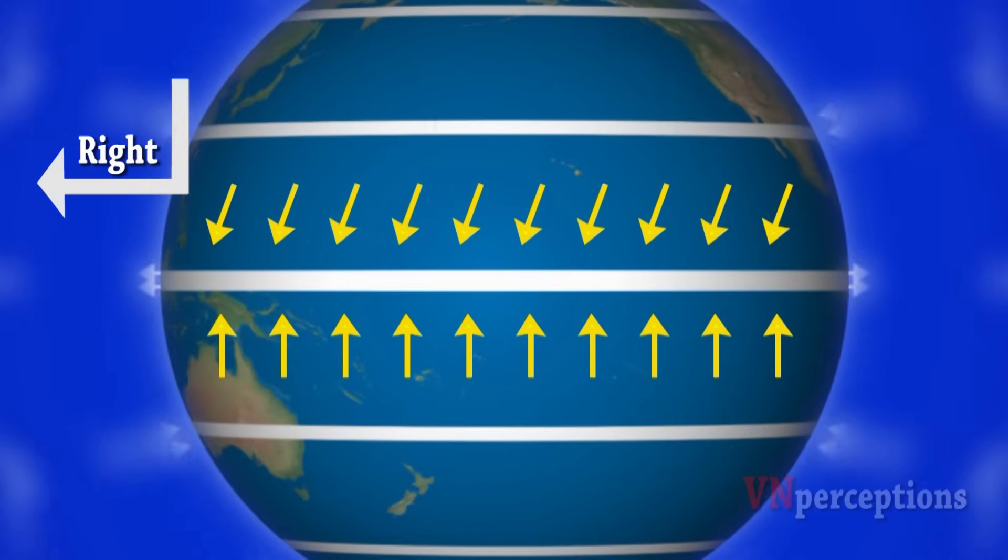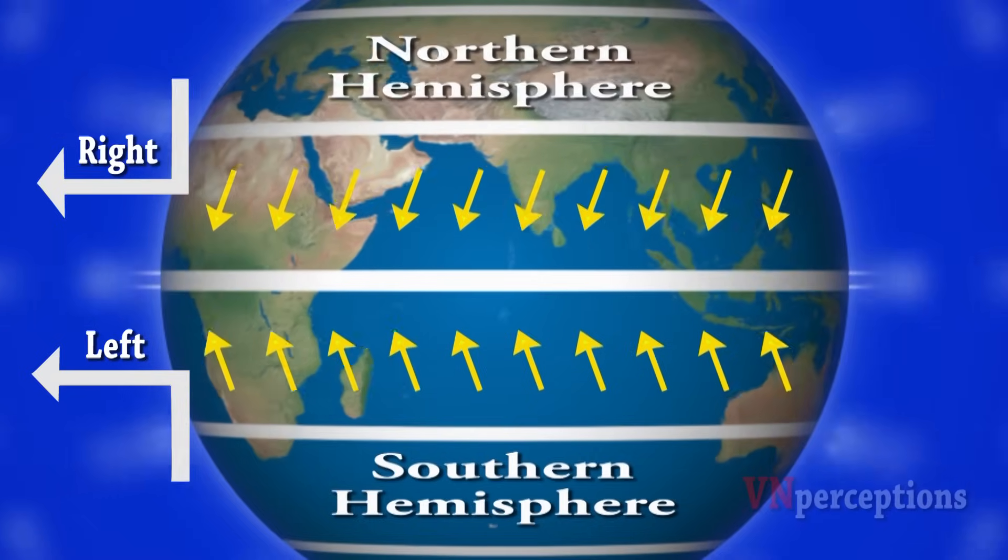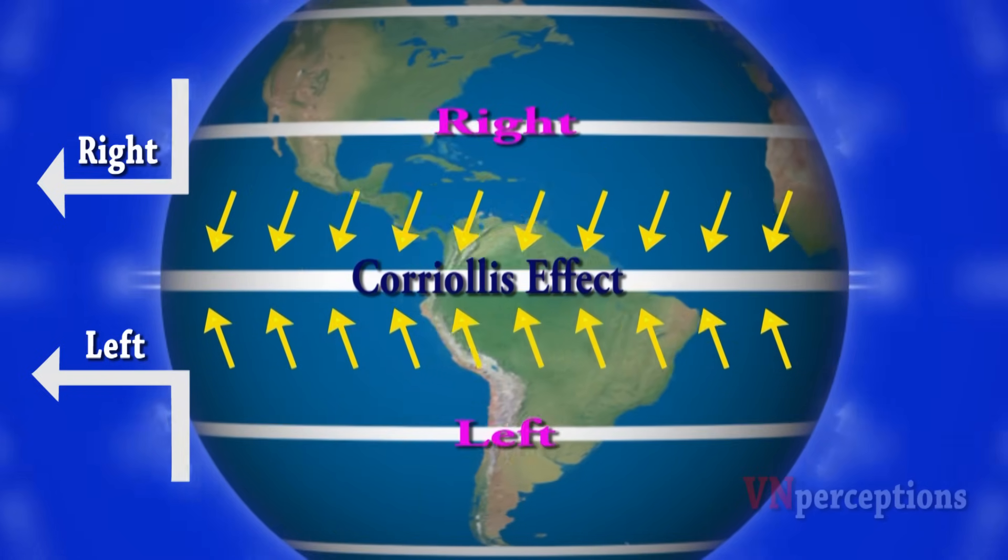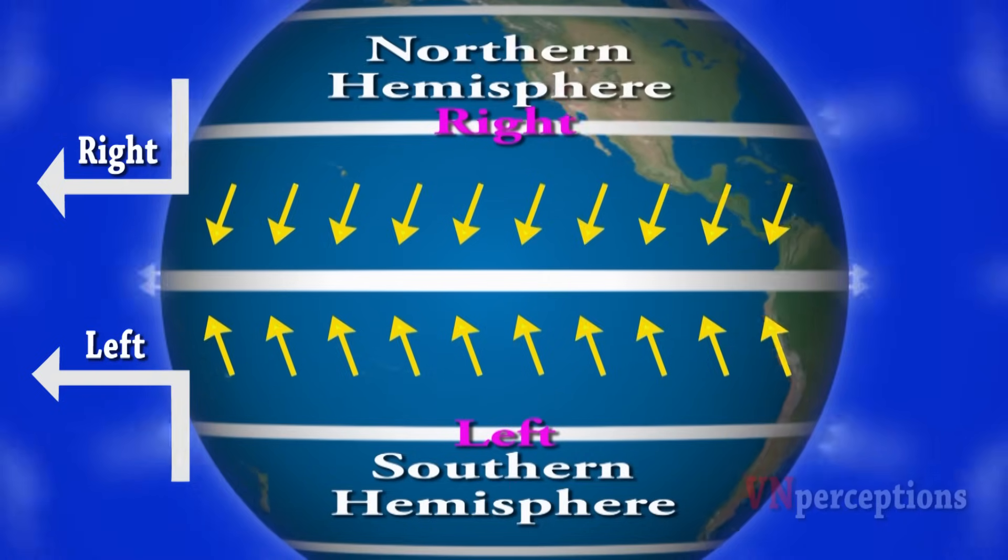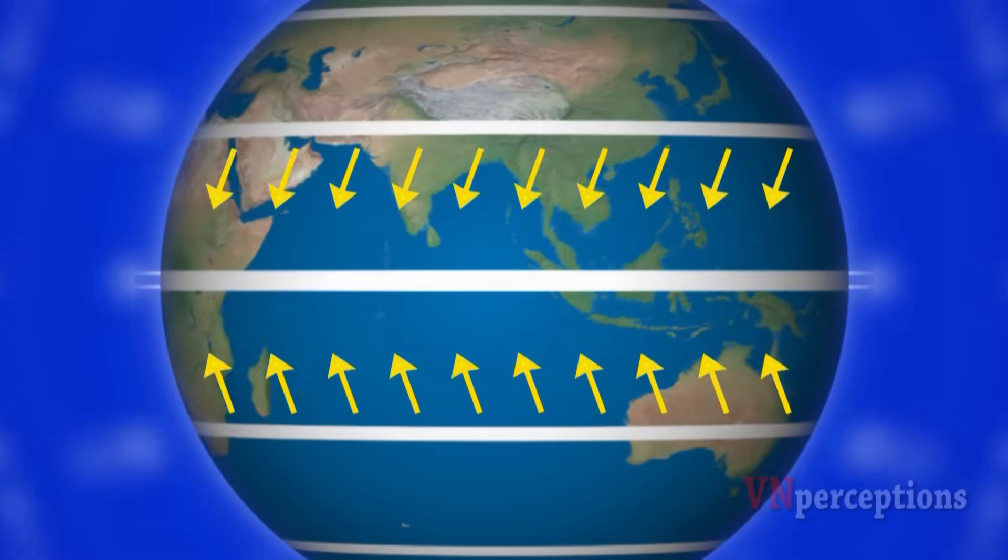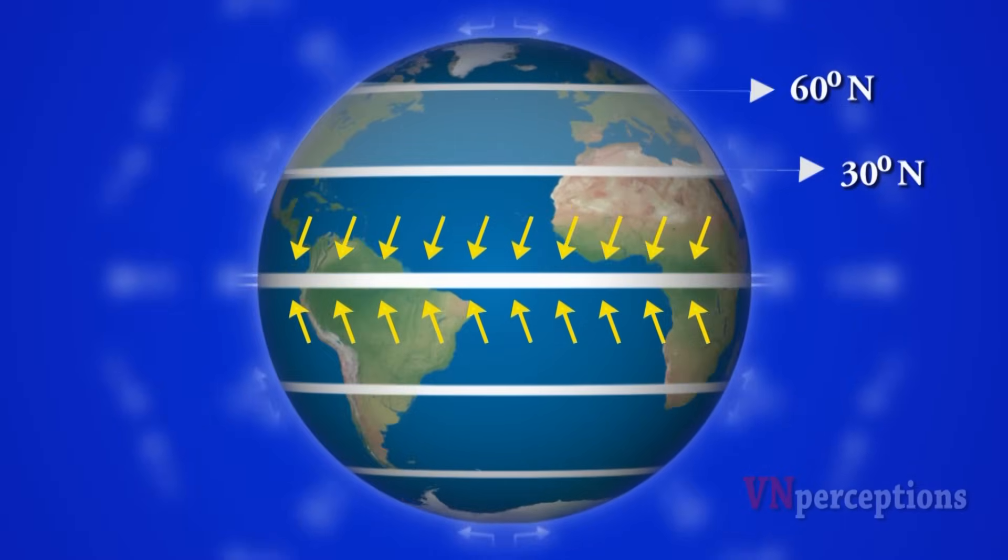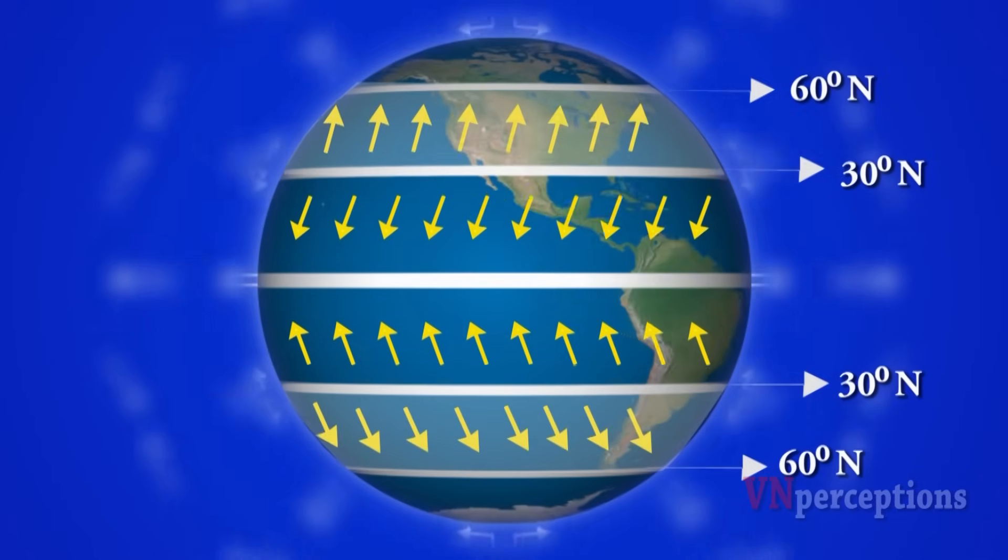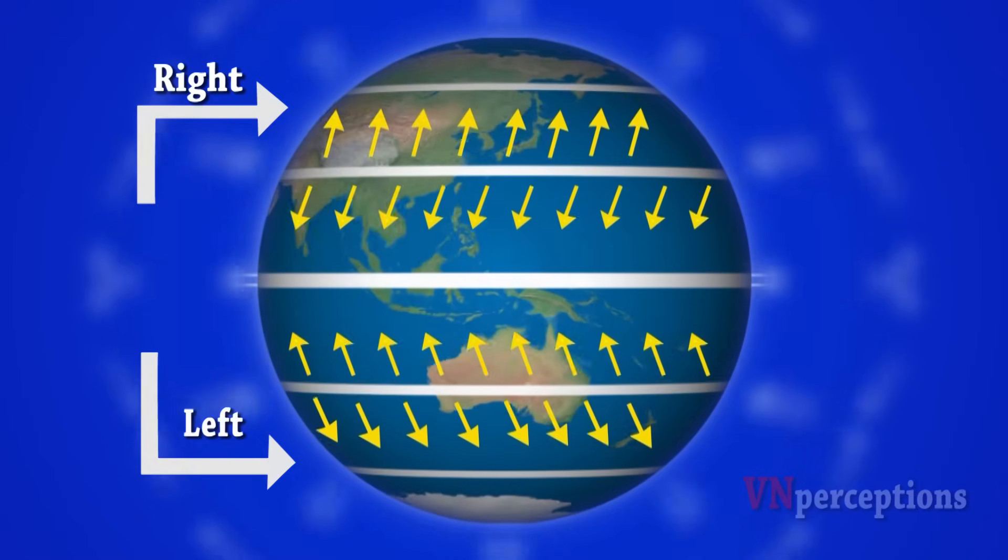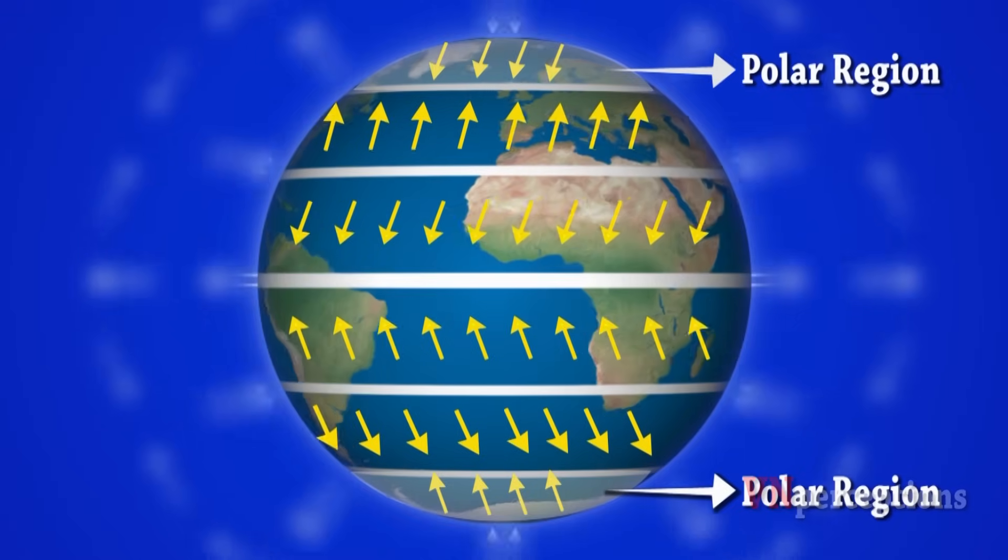These winds bend to the right in the northern hemisphere and in the southern hemisphere the winds bend to the left. This is described as coriolis effect. The winds bend to the right and left in the northern and southern hemispheres respectively because the earth is spherical in shape and the earth rotates from west to east. In the same way in between 30 and 60 degrees north and south the wind bends towards right and left. Even at the polar region the same phenomena can be seen.